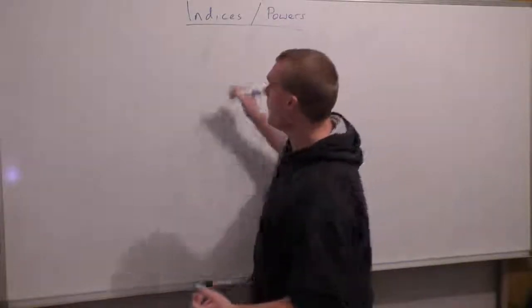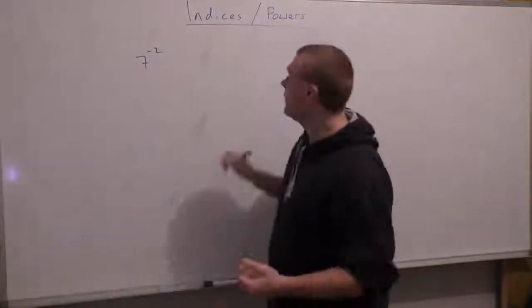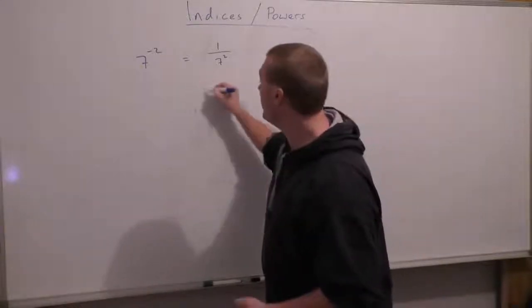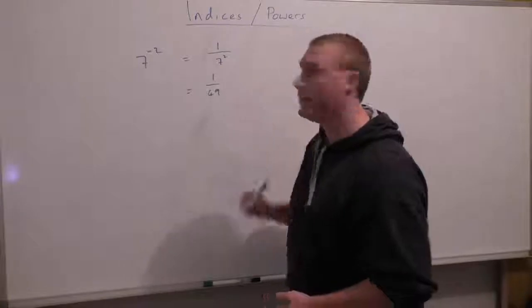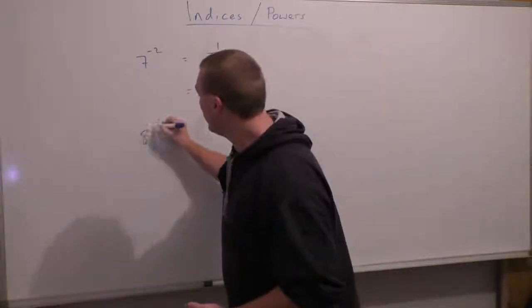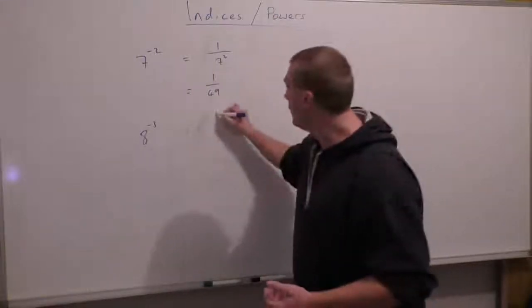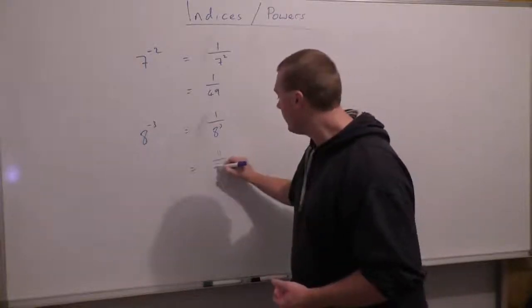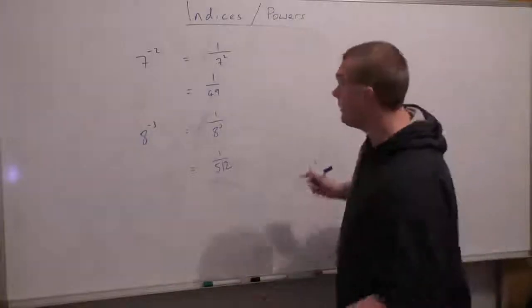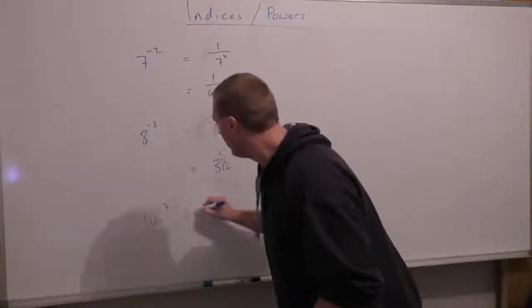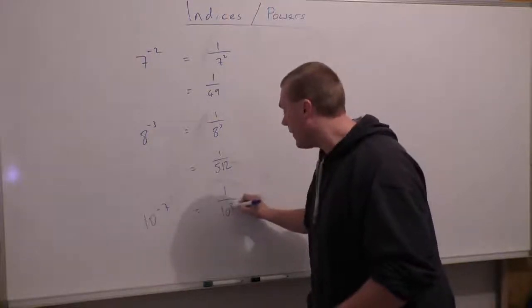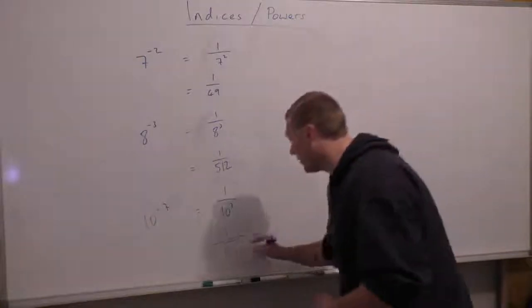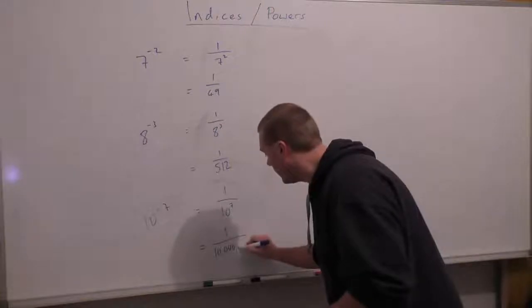Let's look at some examples. If I've got 7 to the power of minus 2, that's just 1 over 7 squared. 7 squared is 7 times 7, which is 49, so the answer is 1 over 49. If I've got 8 to the power of minus 3, that's 1 over 8 to the power of 3, and 8 to the power of 3 is 512. If I've got 10 to the power of minus 7, that's 1 over 10 to the power of 7. 10 to the power of 7 is 1 followed by 7 zeros, which is 10 million.